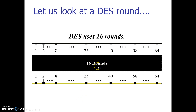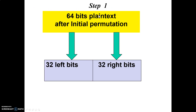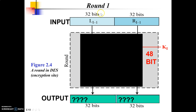DES makes use of 16 rounds. We are not going to study all 16 rounds because all of them are similar, so I will explain the first round and then you can understand how all the remaining 15 rounds work. Step number 1 for round number 1: you take the output of the initial permutation and divide it into 2 parts — 32-bit left hand side and 32-bit right hand side. I am sending these 64 bits as an input to round number 1 along with a 48-bit key. The output is again going to be 32-bit LHS and 32-bit RHS.